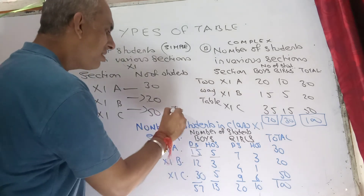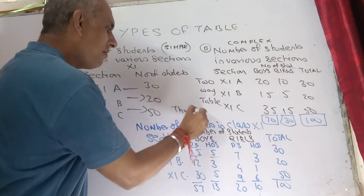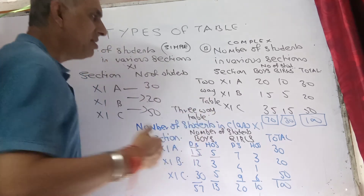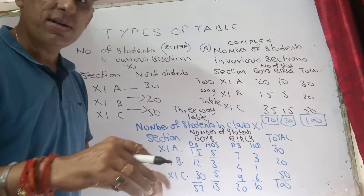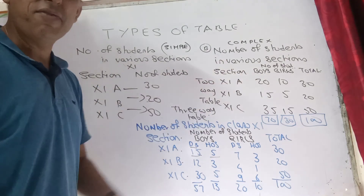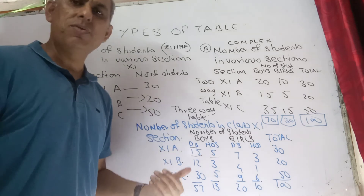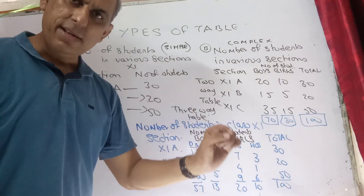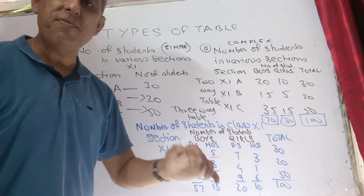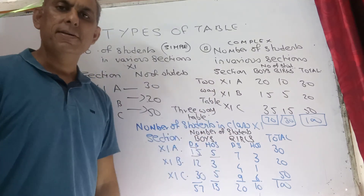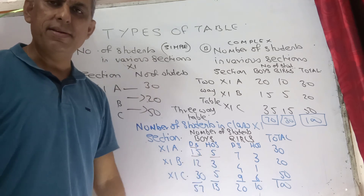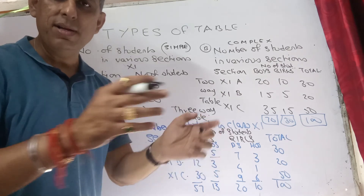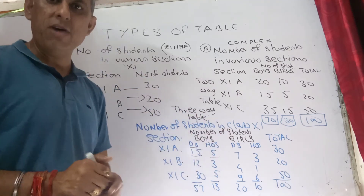This is what we call a three-way table. We call it three-way because the information is more descriptive than the previous one — three sets of information: the number of students, division on the basis of gender, and within each gender how many are day scholars and how many are in the hostel. I hope all of you understood it. Thank you.